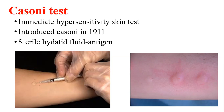After half an hour, a positive reaction shows a wheal and flare-like reaction with a wheal greater than 5 centimeters in diameter, with multiple pseudopodia. This is the immediate hypersensitivity test — if a wheal and multiple pseudopodia are present, the patient is positive for hydatid disease.